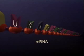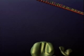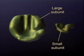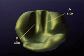The polypeptide can be assembled once RNA binds to a ribosome. Ribosomes consist of large and small subunits. The large subunit has two binding sites for transfer RNA: the P and A sites.